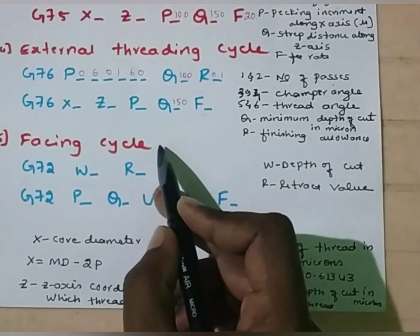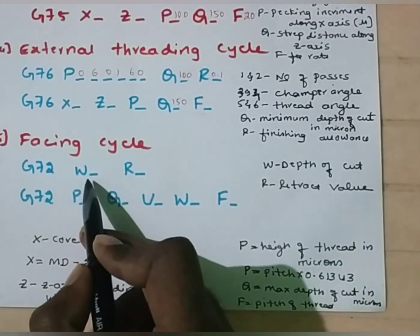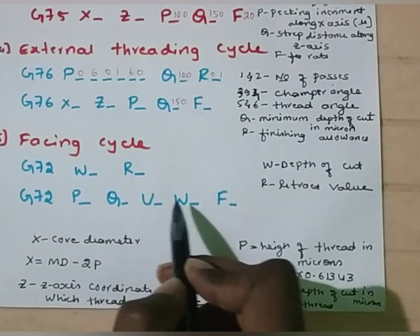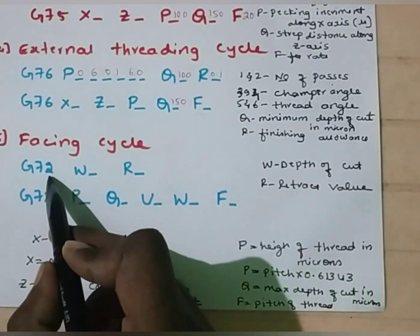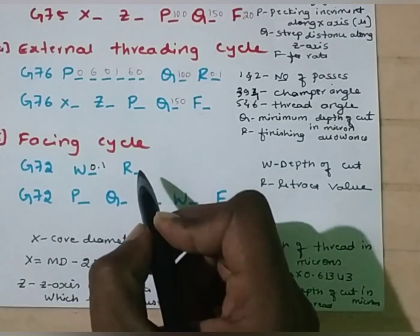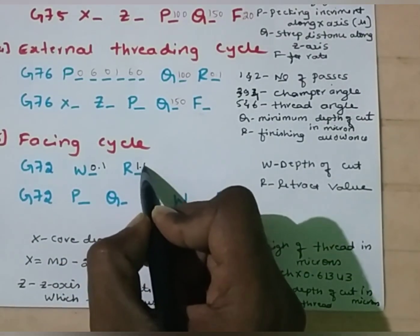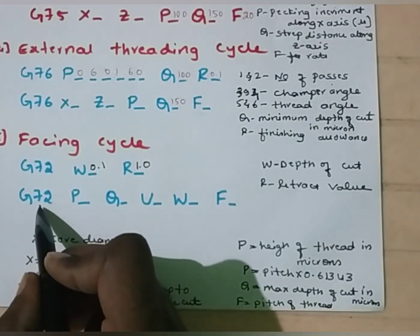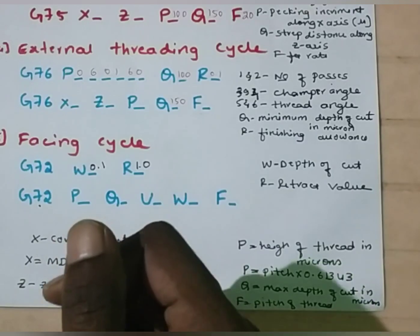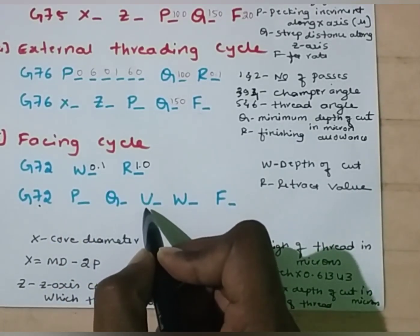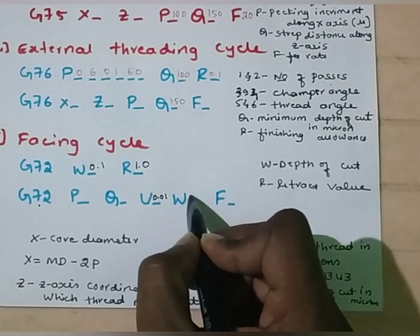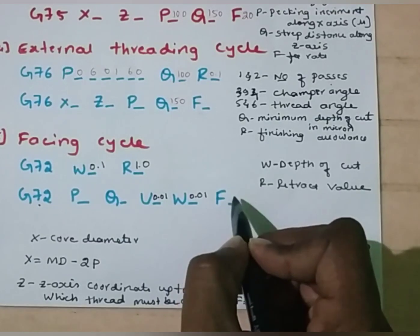Next we have facing cycle. For the facing cycle, the syntax is G72, W-value, R-value. In the next line: G72, P-value, Q-value, U-value, W-value, and F-value. G72 is facing cycle. W is the depth of cut — I am going to assume it as 0.1 mm. R is retract value — I am going to assume it as 1 mm. In the second line, P is the starting block number and Q is ending block number; both values can be determined after writing the program. U is finishing allowance in X direction — I am going to assume it as 0.01 mm. W is finishing allowance in Z-axis — 0.01 mm. F is the feed rate; let it be 25 mm.